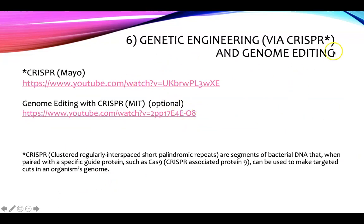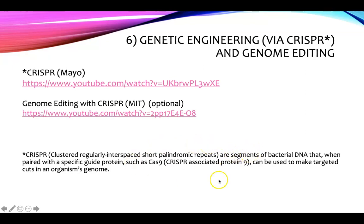Genetic engineering via CRISPR — the latest and hottest tool in genetic engineering. CRISPR stands for Clustered Regularly Interspaced Short Palindromic Repeats. CRISPRs are segments of bacterial DNA that, when paired with a specific guide protein such as Cas9 — CRISPR-associated protein 9 — this tool can be used to make targeted cuts in an organism's genome.